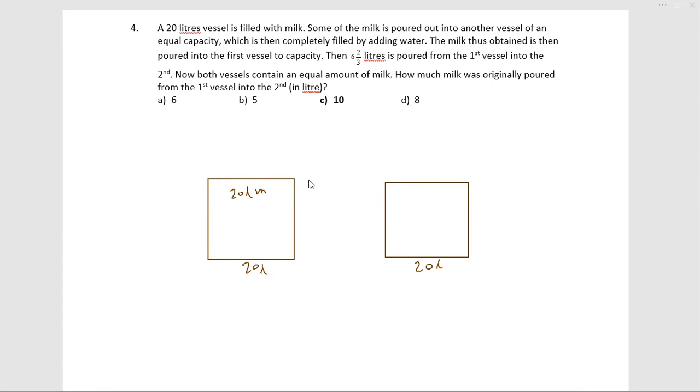Now some milk is transferred. I will go by option 6, so much left is 14, and 6 is there. Now it is filled with water, so 6 liters of milk and 14 liters of water. Now again, the first one is filled up.